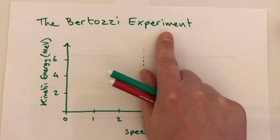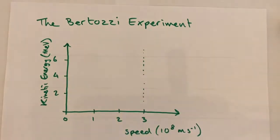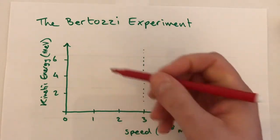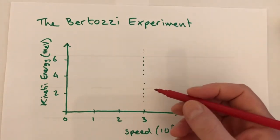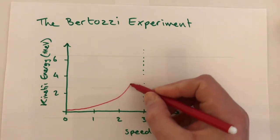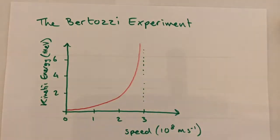Bertozzi accelerated electrons to various measured speeds and also measured their kinetic energies. He found that as the force that acts on a very fast electron is increased, the electron's measured kinetic energy increases towards very large values, but its speed is asymptotically limited to the speed of light.